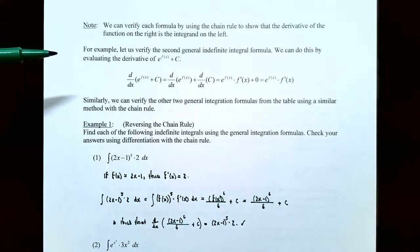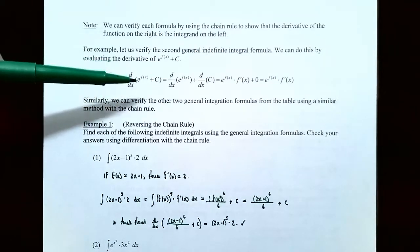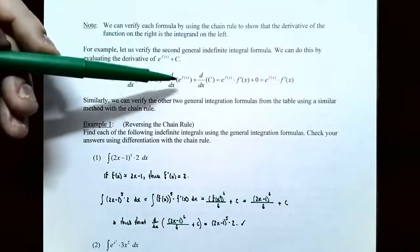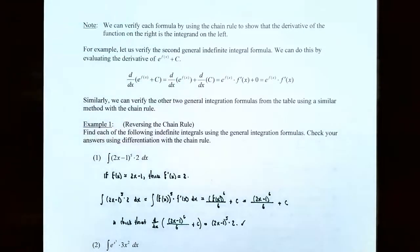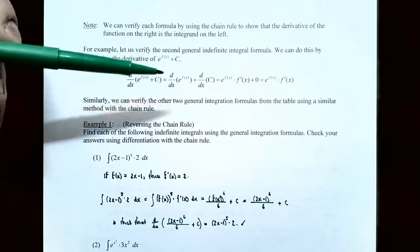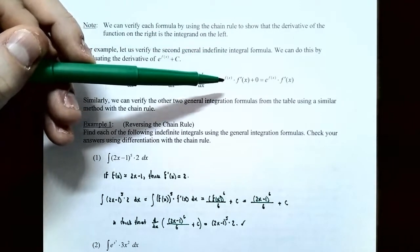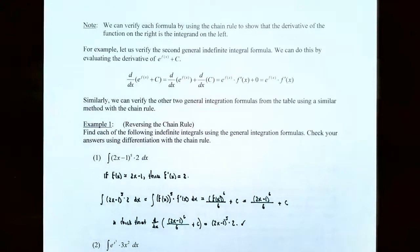For example, let's verify the second general indefinite integral formula, which involves the exponential function. We evaluate the derivative of e to the f of x power plus c. Using the sum rule, you have the derivative with respect to x of e to the f of x, plus the derivative of the constant c. The derivative of c is zero. For the first term, it's not just e to the x — it's e to a function, so you must use the chain rule. The derivative of e to the f of x is e to the f of x itself, and then multiply by f prime of x, the derivative of the inside function. This simplifies to e to the f of x times f prime of x, which is exactly the integrand in that second formula. We can verify the other two general integration formulas similarly using the chain rule.